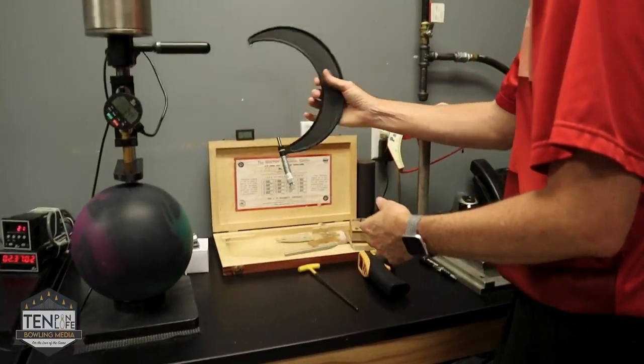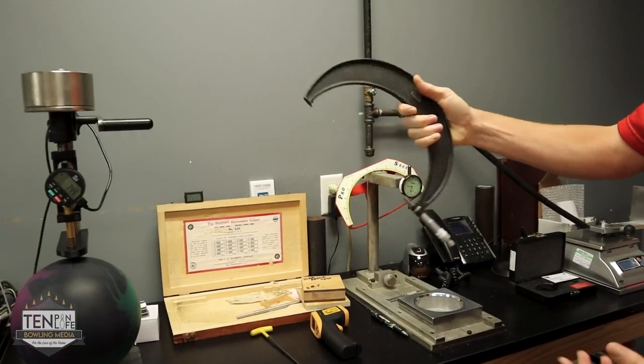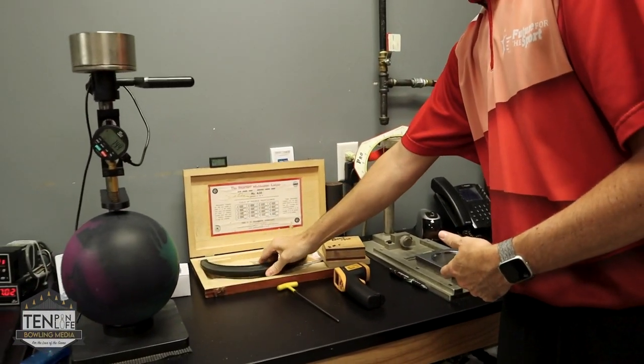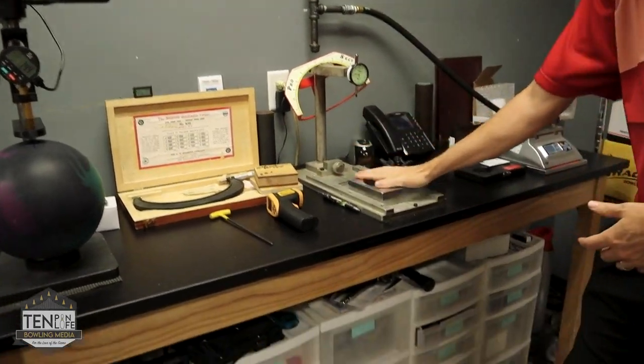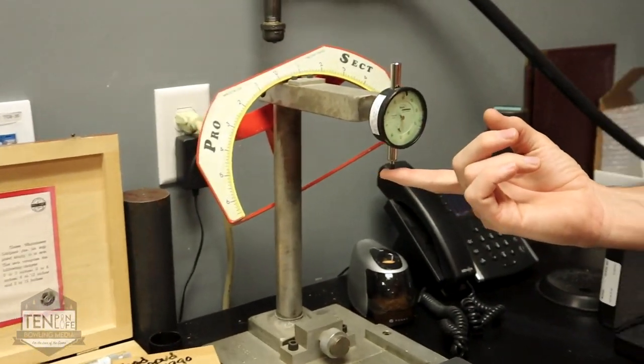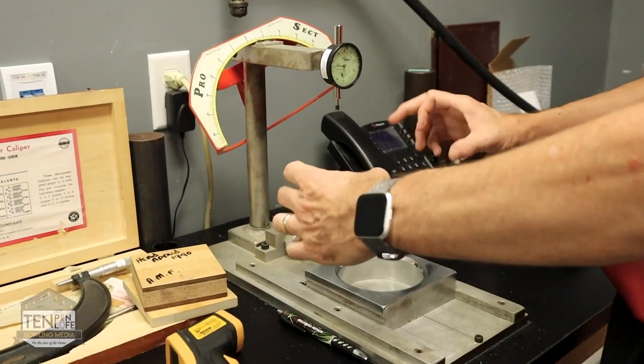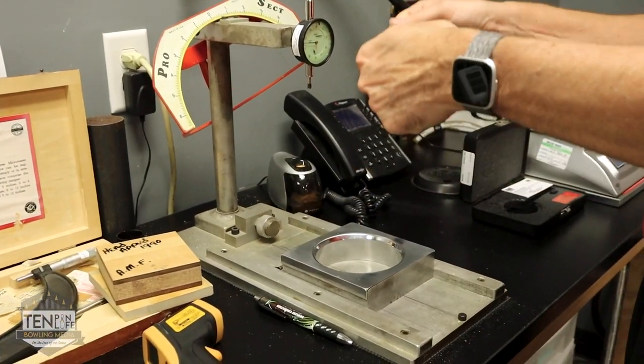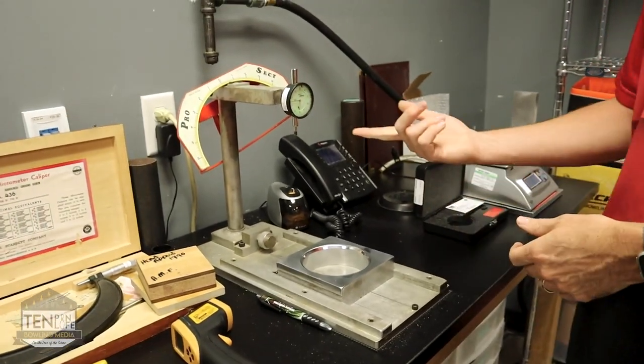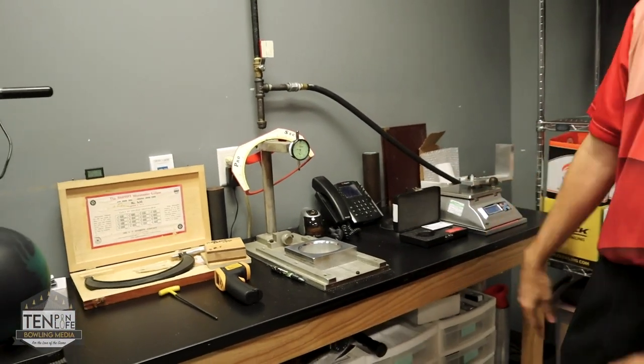We would use this Starrett micrometer, an 850. We're measuring the diameter of the ball this way. It's got to be under 8595. We'd put the ball onto this gauge here. As you rotate the ball around, this dial indicator gives you any difference in height, which would be the difference in roundness. It's going to give you a total run out or how much difference in the roundness between the minimum and the maximum.